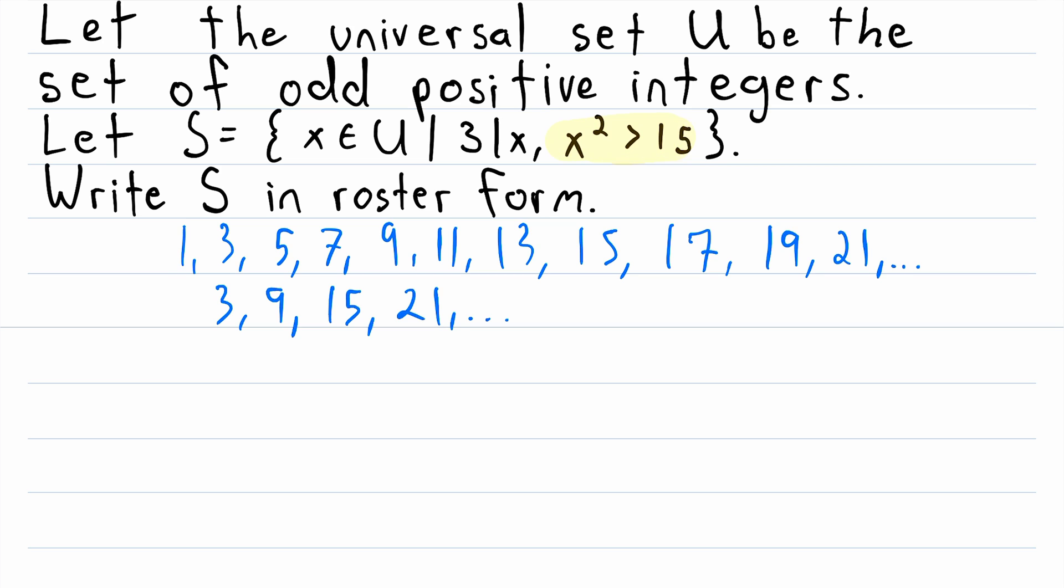The last condition is that for every element of S, its square must be greater than 15. So now we'll apply that condition to this smaller list. I know that 3 squared is 9, so 3 does not fit this last condition. But 9 squared is 81, and 81 is greater than 15,